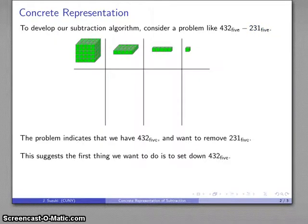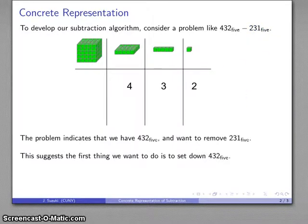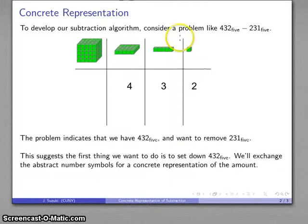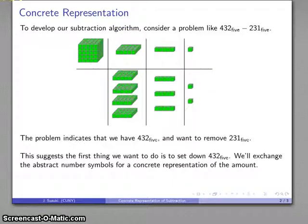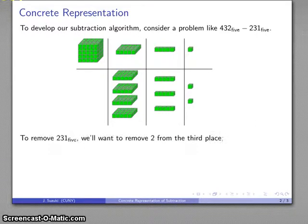So I'm going to set down my 432 base 5. And because I want to work with the concrete representation, I know I have 4 of these, 3 of these, 2 of these, but let's go ahead and draw those in. So there's my 4, 3, and 2. And then I want to remove 231, 2 of these, 3 of these, 1 of these.